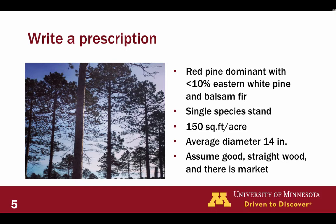Let's use this as an exercise — this is a Lake States focus. We have a red pine dominant forest. If you don't have red pine in your area, substitute with your dominant species: ponderosa pine, shortleaf, or one of the southern pines. Red pine is our dominant species. We have less than 10% in our basal area of eastern white pine and balsam fir. It's a single-species stand, pretty even-aged, about 150 square feet of basal area, average diameter of 14 inches. We'll assume good straight wood and there is a market.